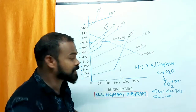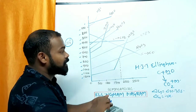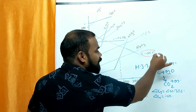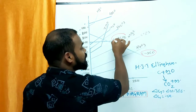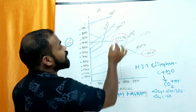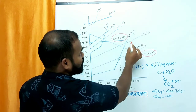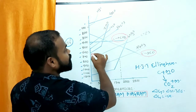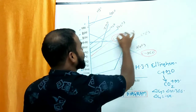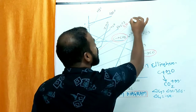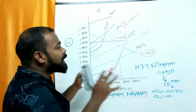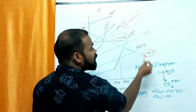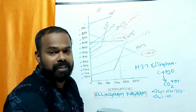Now I want to draw a new graph. In this graph I am drawing three lines. First: carbon gives CO. Second: carbon gives CO₂. Third: carbon monoxide gives CO₂. These three lines are required to explain the Ellingham diagram. I'm marking them with a circle — only these three lines are required. This is a shortcut — just follow me.